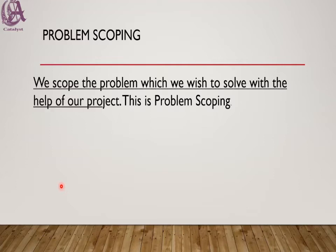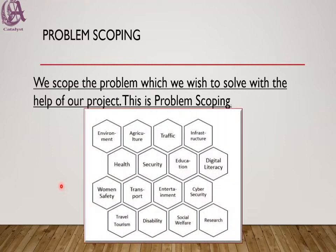Here we have to identify how much the problem is spread and what are the areas where it is spread. The areas can be environment, agriculture, traffic, infrastructure, health, security, education, digital literacy, women safety, and so on. We see a lot of problems which require an AI-enabled solution.